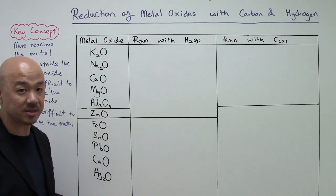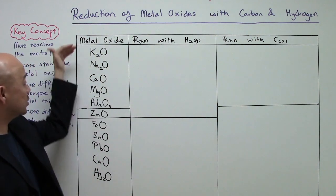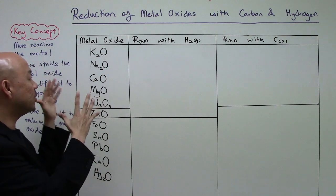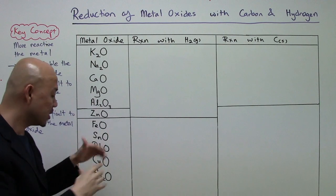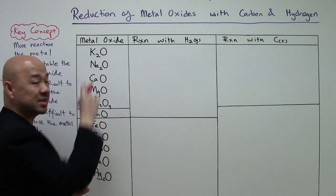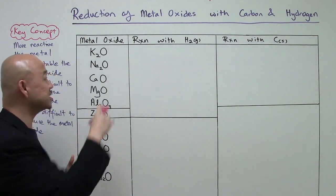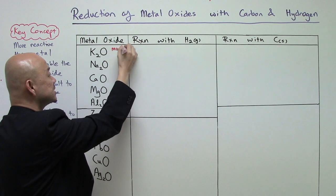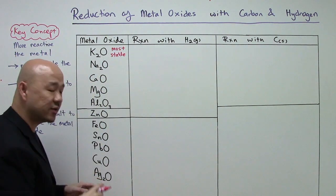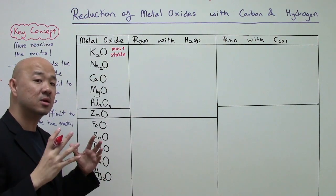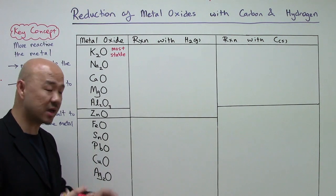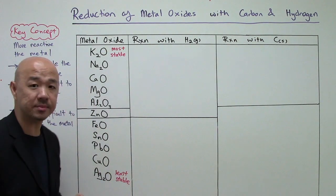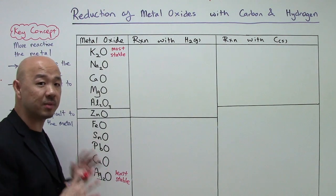So gold oxide is not common, which is why the list ends with silver oxide. From potassium oxide to silver oxide, these are more stable metal oxides. Potassium, being the most reactive metal, forms the most stable metal oxide in this list. Silver, being the most unreactive metal here, forms a metal oxide that is the least stable.